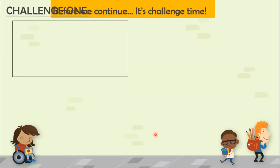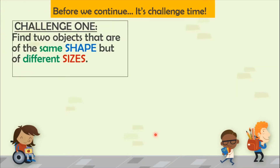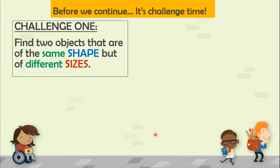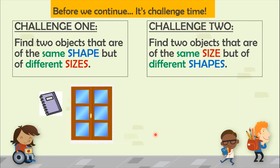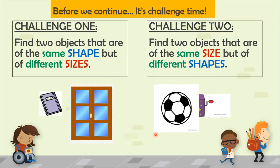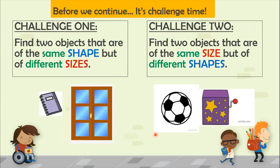The challenge was to find two objects that are the same shape but different sizes. For example, these two objects have the same rectangular shape but one is small and one is big. Challenge two was to find two objects that are the same size but different shapes — a ball and a cube: same size, different shape.